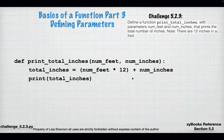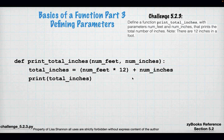We know how to define and name a function, we know local and global scope, and we know how to call a function. But there's more — we already know you can pass things into a function. The next thing to look at is parameters and arguments, because that's how you get data into a function. For example, in challenge 5.2.3, we want to print total inches given a number of feet and a number of inches.